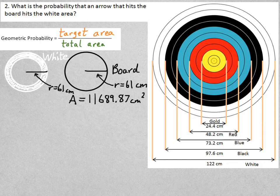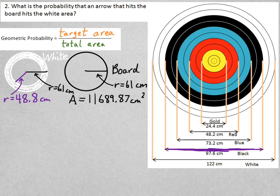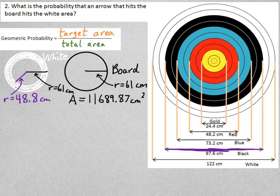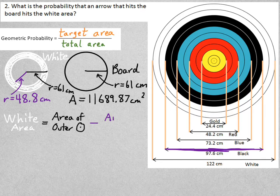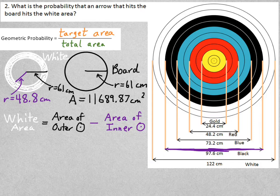The radius of the outer circle of the white region is still 61 centimeters, just like the whole board. The radius, what's the radius of the inside? The inside circle is half of the diameter 97.6. So that would be 48.8 centimeters. So how would I find the region of the white ring? Basically, it's a circle minus a circle. So the white area would be the area of the outer circle minus the area of the inner circle. Think finding the area of a shaded region, just like we did earlier in the unit.